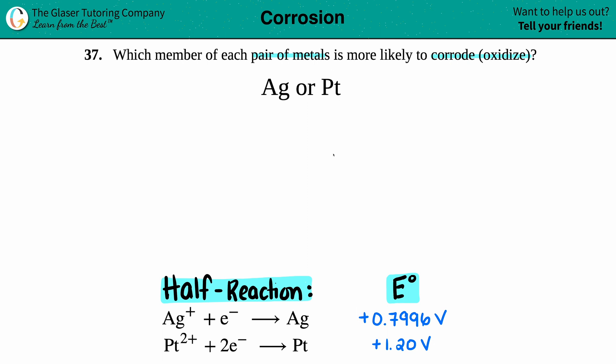We can only do this question if we go in the back of a textbook to find out the half reactions between silver and platinum with their corresponding E° values. So for silver, it has 0.7996 volts and Pt has 1.20 volts.